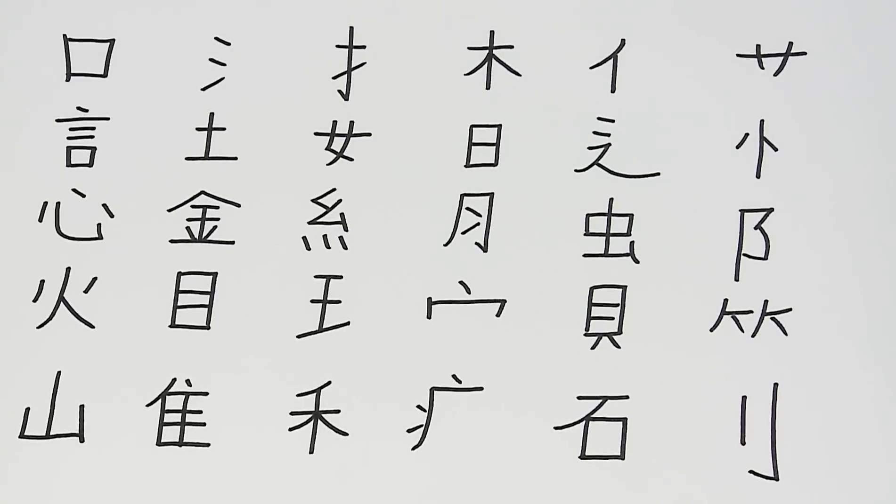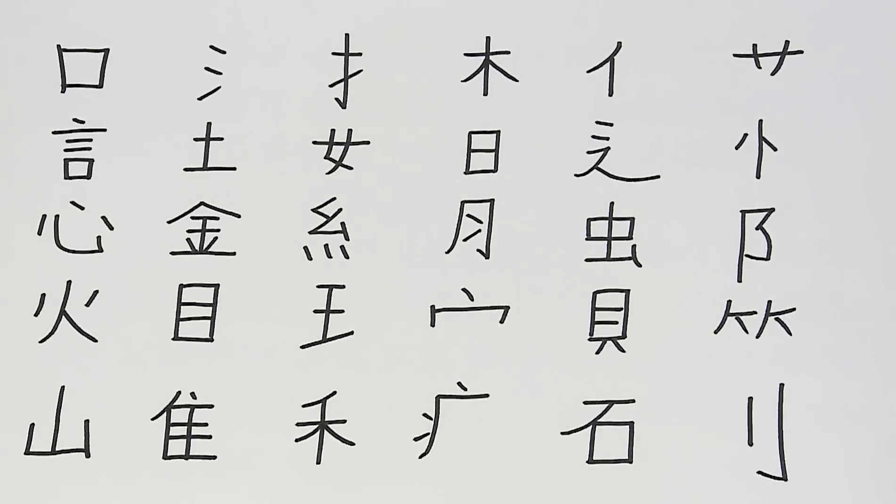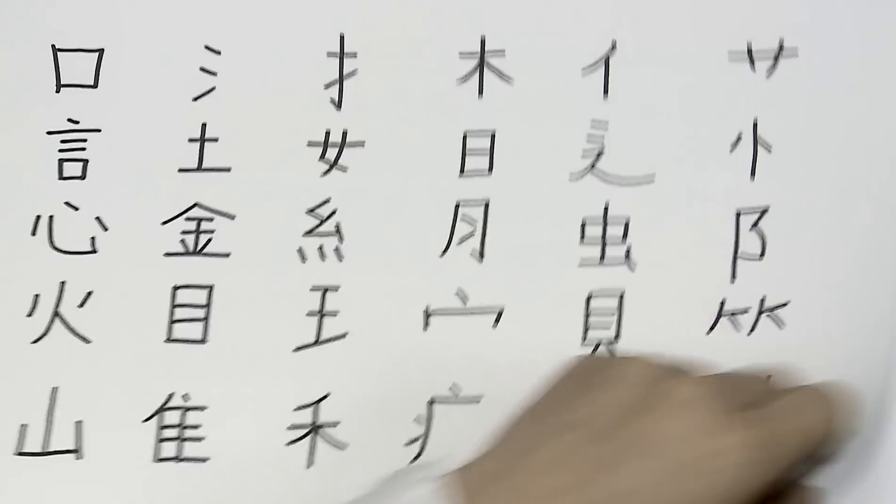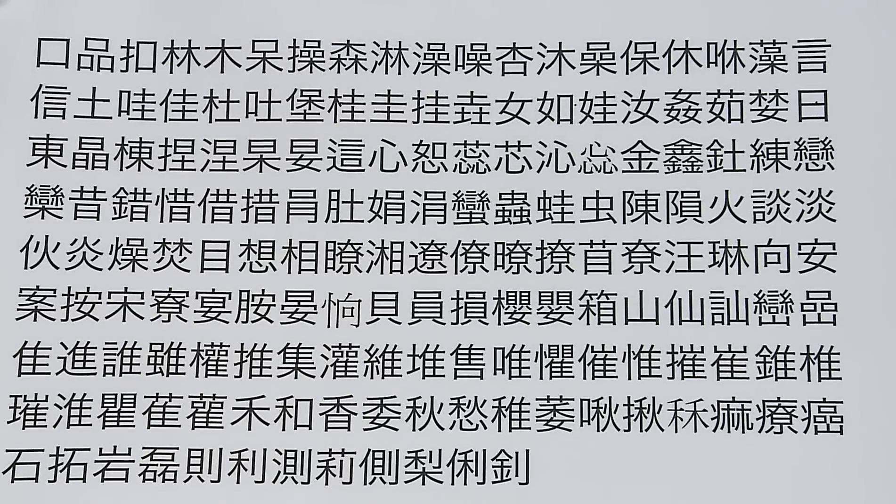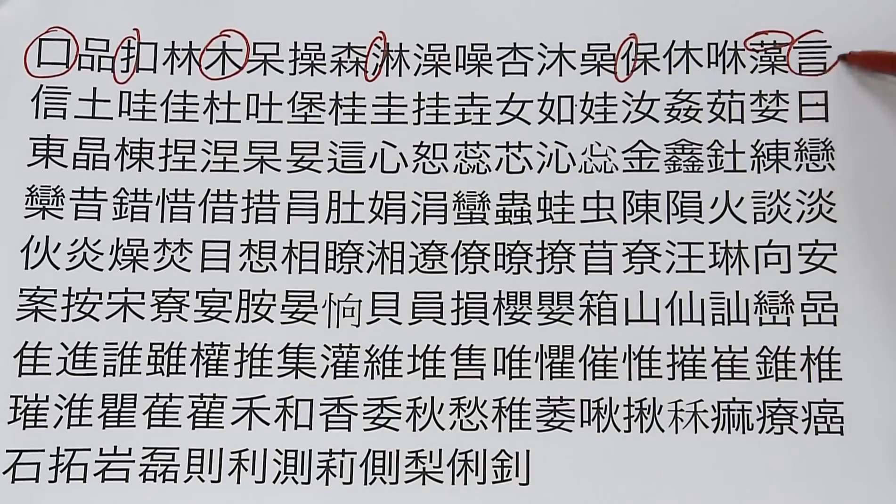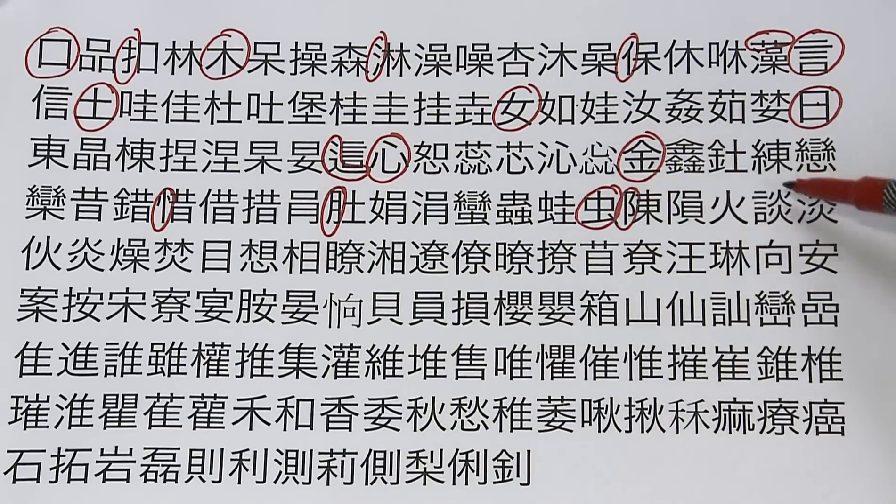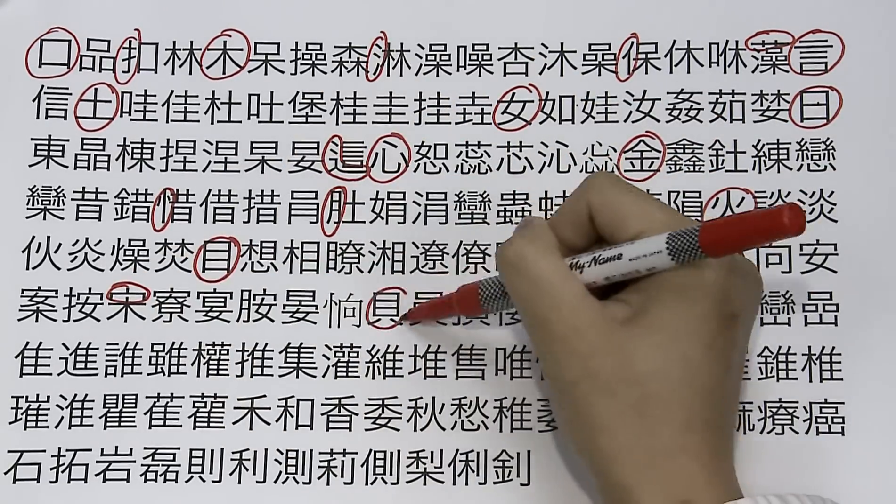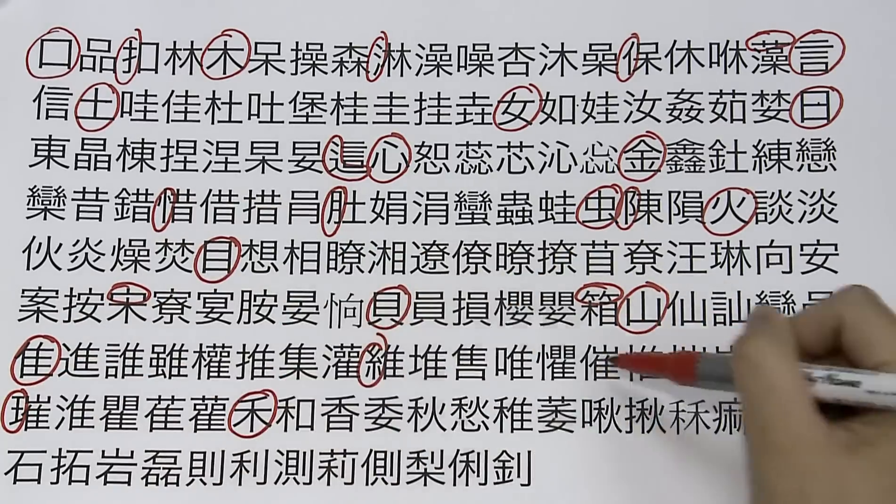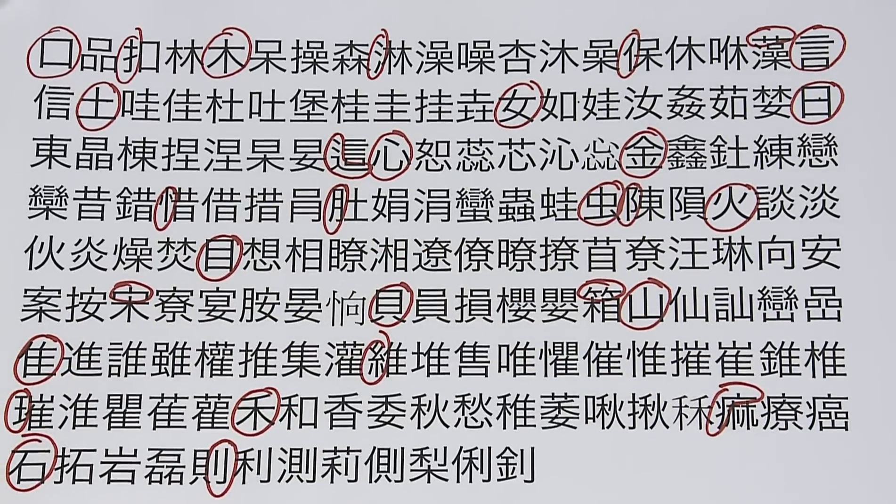These 30 basic components combine with each other to form nearly 180 different Chinese characters. That means just by knowing these 30 basic components you will be able to write 180 different characters. Go ahead and pause the video here to take a closer look and see that these Chinese characters aren't just a collection of random lines. They are all composed of the same 30 basic parts.